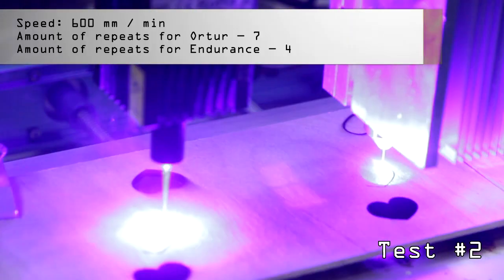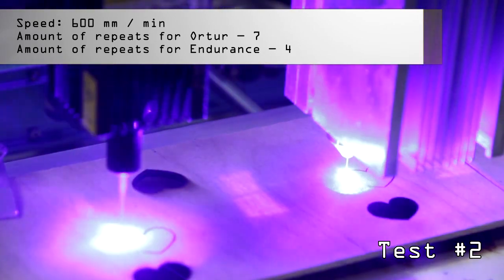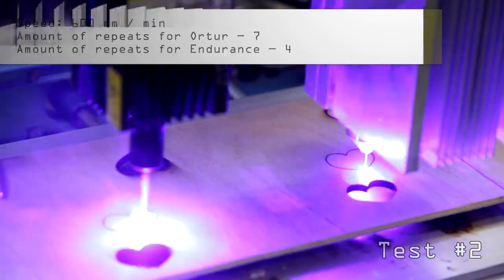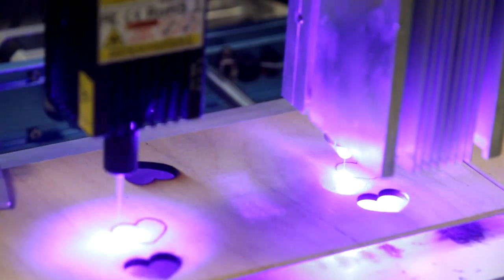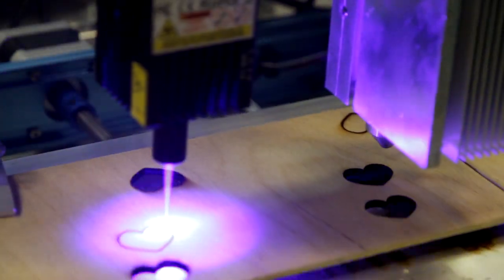Second experiment, we set up a laser cutting speed at 600mm per minute. Overture needs 7 passes. Endurance 10W Plus Pro needs only 4 passes to cut it completely.